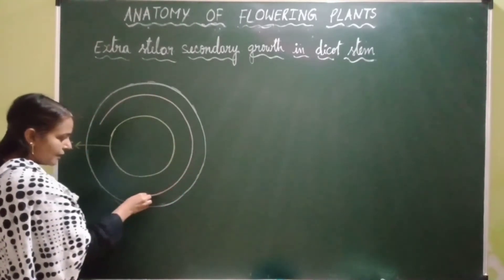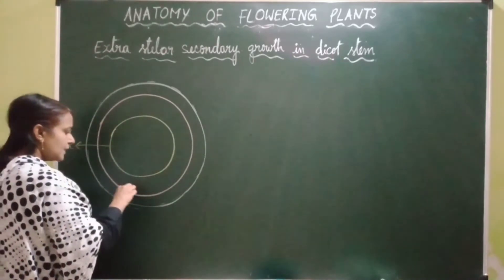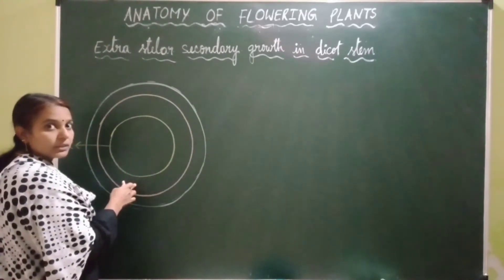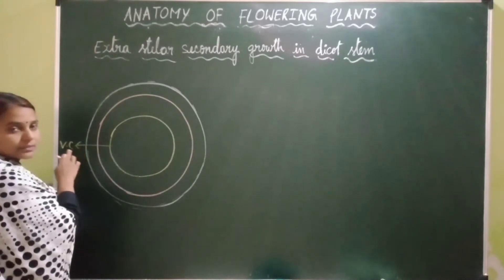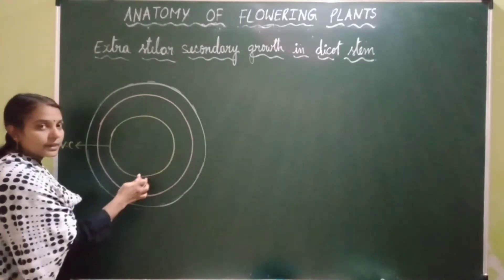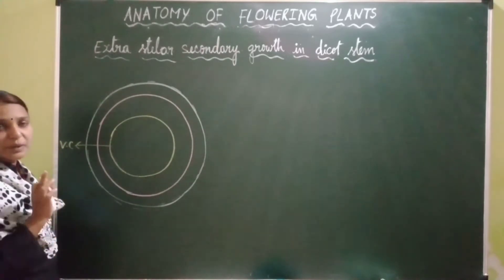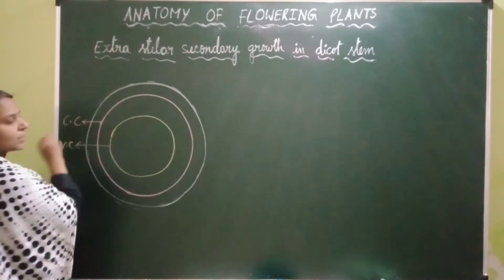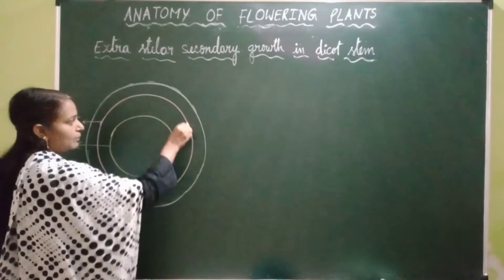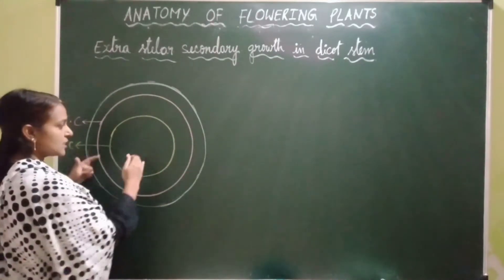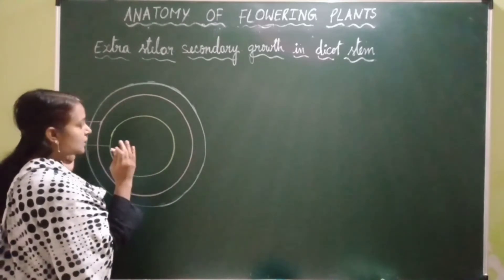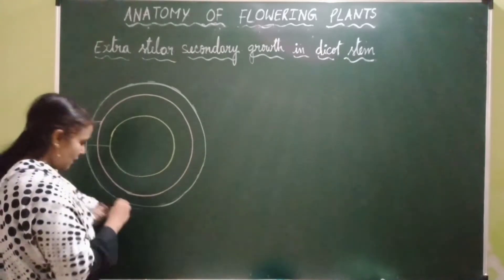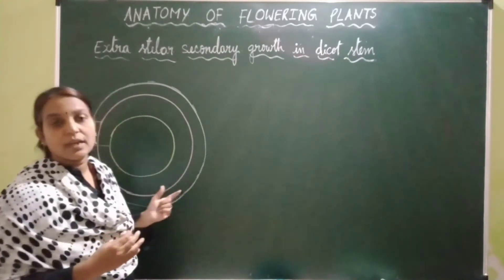Cork cambium is developed outside the stele, whereas vascular cambium is developed inside the stele. Hence it is called extra-stelar. The secondary growth taking place by the activity of vascular cambium is called stelar secondary growth, whereas the secondary growth taking place by the activity of cork cambium is called extra-stelar secondary growth. Another cambium called cork cambium develops outside the stele — that is, extra-stele.